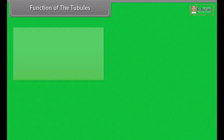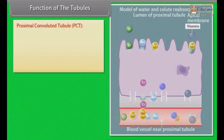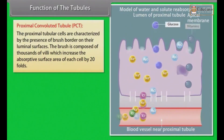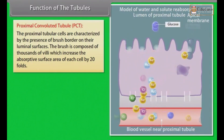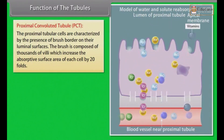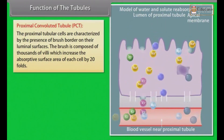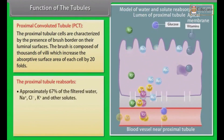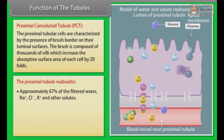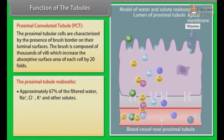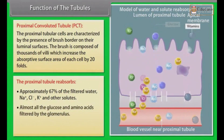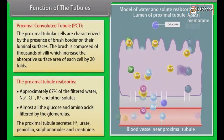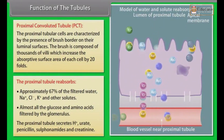Function of the Tubules — Proximal Convoluted Tubule (PCT): The proximal tubular cells are characterized by the presence of a brush border on their luminal surfaces, composed of thousands of villi, which increases the absorptive surface area of each cell by 20 folds. The proximal tubule reabsorbs approximately 67% of filtered water, Na+, Cl-, K+ and other solutes, and almost all the glucose and amino acids filtered by the glomerulus. The proximal tubule also secretes H+, urate, penicillin, sulphonamides and creatinine.